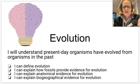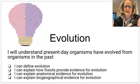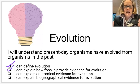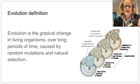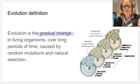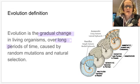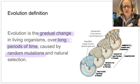In this video we're going to think about evolution and understand that present-day organisms have evolved from organisms in the past. We will define evolution and explain how fossils provide evidence for evolution. Evolution is the gradual change in living organisms over long periods of time, caused by random mutations and natural selection working together.